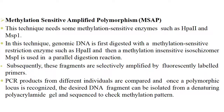One technique for studying methylation is MSAP (Methylation-Sensitive Amplified Polymorphism), which uses methylation-sensitive restriction enzymes like HpaII and the methylation-insensitive isoschizomer MspI. Genomic DNA is first digested with HpaII and then MspI in a parallel digestion reaction. These fragments are selectively amplified by fluorescently labelled primers. PCR products from different individuals are compared, and once a polymorphic locus is recognized, the desired DNA fragment can be isolated from a denaturing polyacrylamide gel and sequenced to check methylation patterns. Methylation patterns across different individuals or organisms can thus be compared.